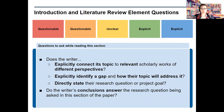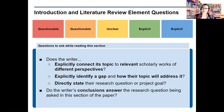For the introduction and literature review elements, consider the following questions. Inside this element, which is typically at the start of the paper, does the writer explicitly connect the topic to relevant scholarly works of different perspectives? Does the writer explicitly identify a gap and how their topic will address that gap? And does the writer directly state their research question or project goal? Revisit the conclusions and compare them to the original research question from the introduction. We often find that students do not go back to check their intro and lit review once they've reached conclusions, so it's your job to help them catch those moments where they need to do more work.